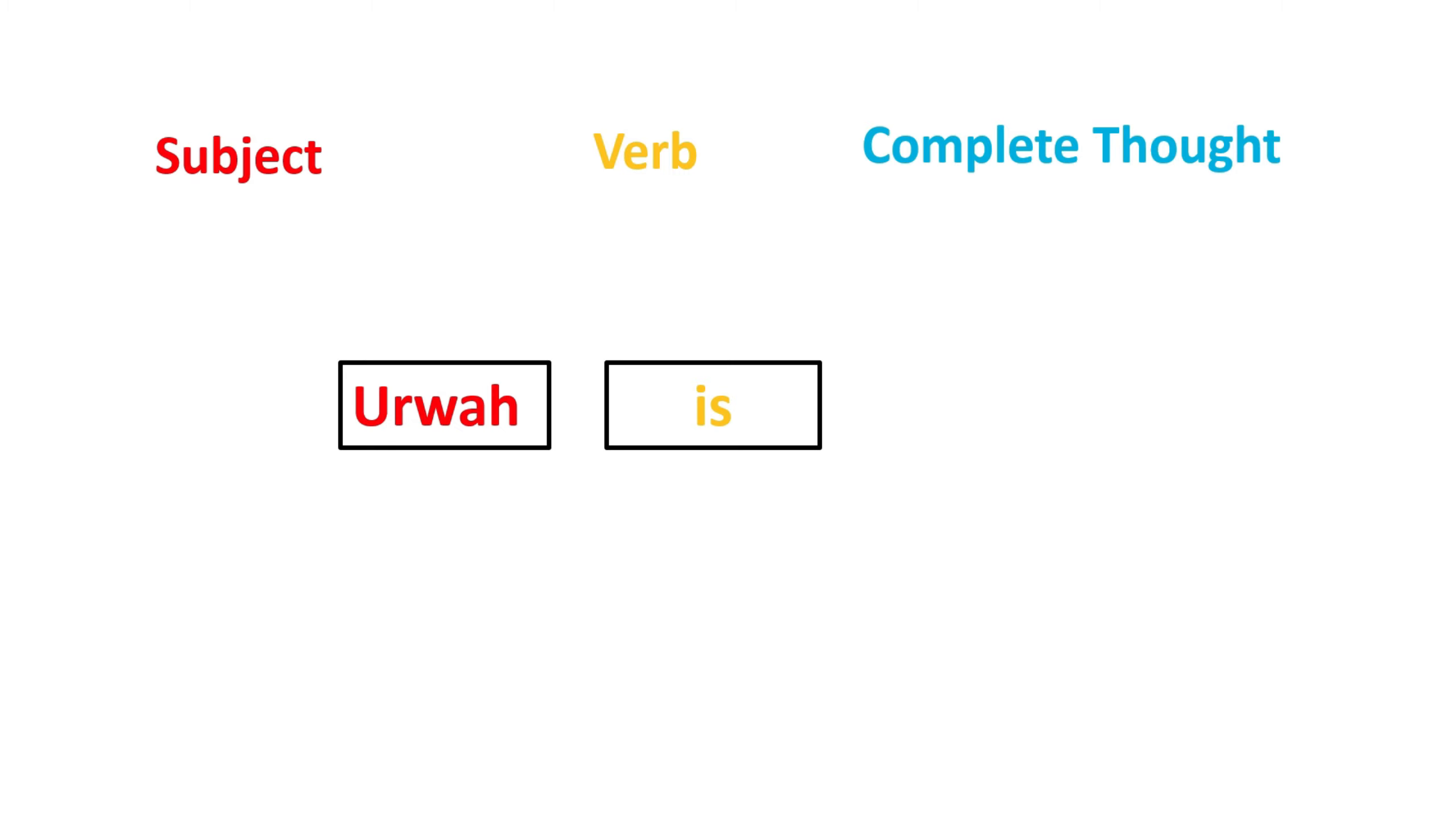Urwa is a subject, which is a person, and is is indeed a verb. But it's not a complete simple sentence because the thought is not complete. We still need to ask, what is she?